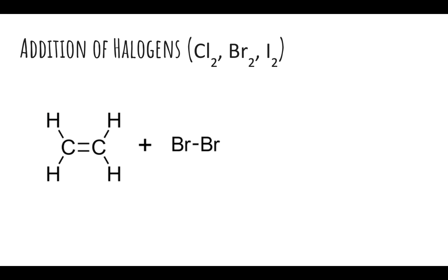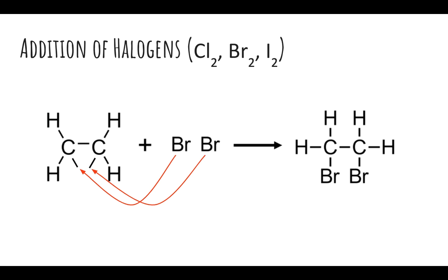Another example is the addition of halogens—chlorine, bromine, and iodine—across a double bond. In this example, we're showing bromine. The same thing happens as with hydrogen: one of the bonds breaks, the bond between the bromines breaks, and a bromine is added to each carbon. Make sure a bromine goes to each carbon; you won't have two bromines on the same carbon.